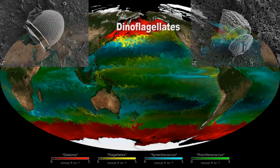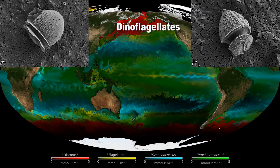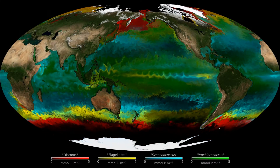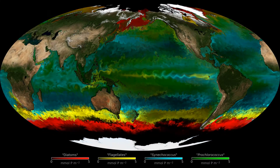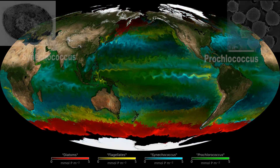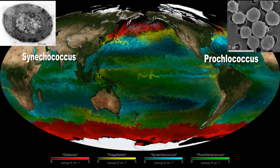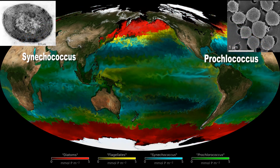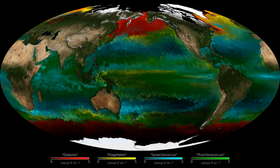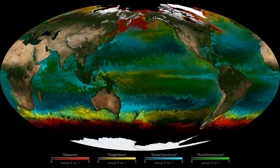Here are some dinoflagellates — these types dominate in the yellow areas. Much smaller phytoplankton are mapped here in blue and green. They are very hard to see even with microscopes as they are so small. Though tiny, they are very important over large regions of the ocean where nutrients are scarce.